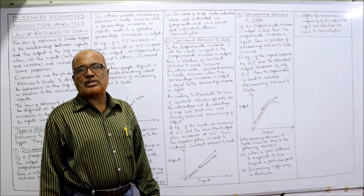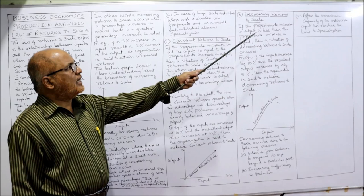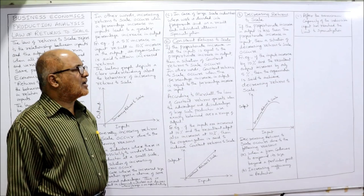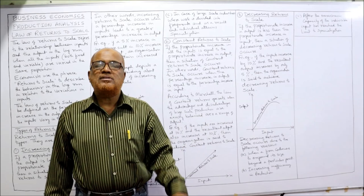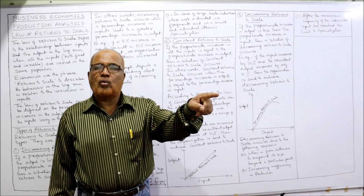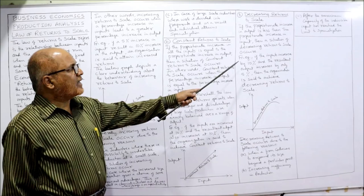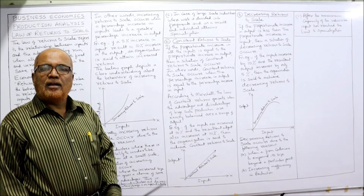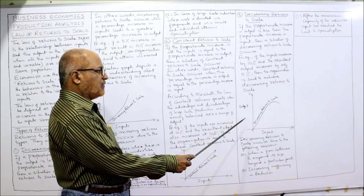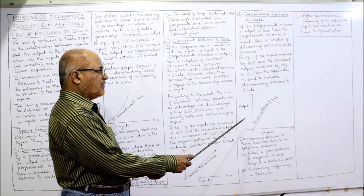The third type is decreasing returns to scale. If the proportionate increase in output is less than the proportionate increase in input, the situation of decreasing returns to scale occurs. For example, if input is increased by 20% but output increases only by 10%, it is called decreasing returns to scale because output is growing at a lower rate than input. If input increases by 10% and output increases only by 5%, the organization is said to achieve decreasing returns to scale. The graph curve for this shows a flattening pattern indicating diminishing output growth.